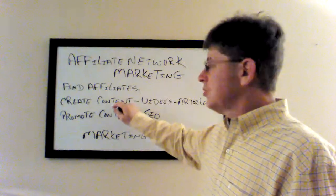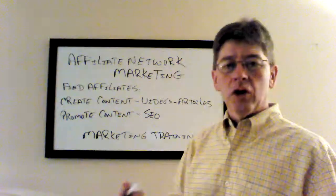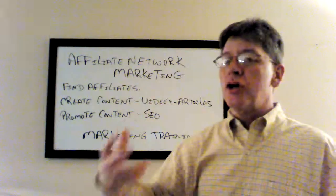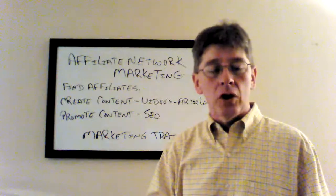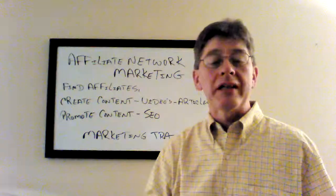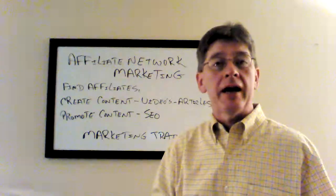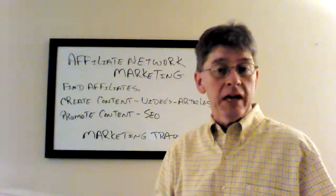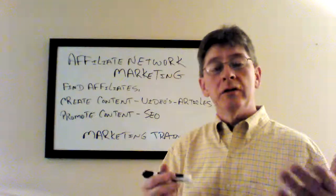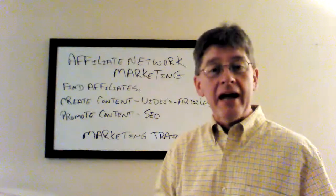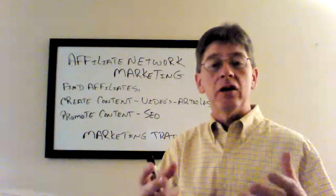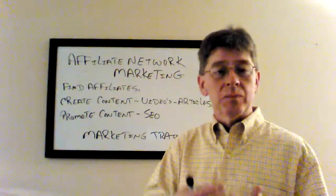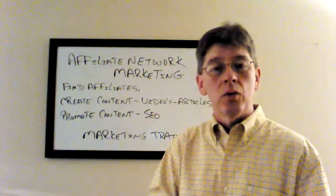Once you find those affiliate offers, all you have to do is create some content around them — blog posts, articles, videos — and you want to make sure that you're targeting your audience. For example, for network marketing lead generation, if you have some training on how to generate leads using YouTube videos, you would make sure that the title, tags, keywords, and the video itself talked about how to generate leads with YouTube videos.